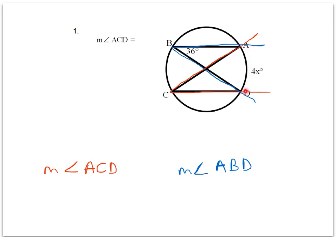When that happens, we know the measures of those inscribed angles are going to be congruent. So if the measure of angle ABD is 36 degrees, then the measure of angle ACD is also 36 degrees, because they share the intercepted arc AD.